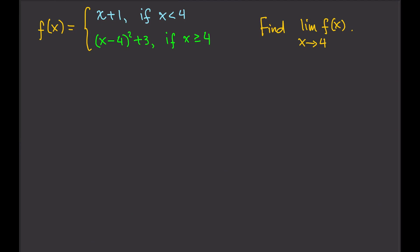f of x equals x plus 1 if x is less than 4, x minus 4 squared plus 3 if x is greater than or equal to 4. Find the limit of f of x as x approaches 4.